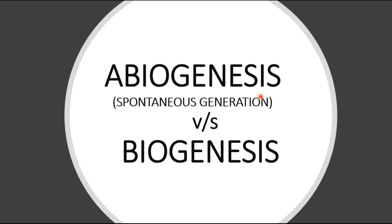What is meant by abiogenesis? The origin of living or life from non-living organisms only is called as abiogenesis, which is also called as spontaneous generation. Coming to biogenesis, the origin of living organisms from living organisms only is called as biogenesis — which are quite opposite. There are certain theories supporting abiogenesis and certain theories supporting biogenesis, and in this video we are going to discuss a few of them.